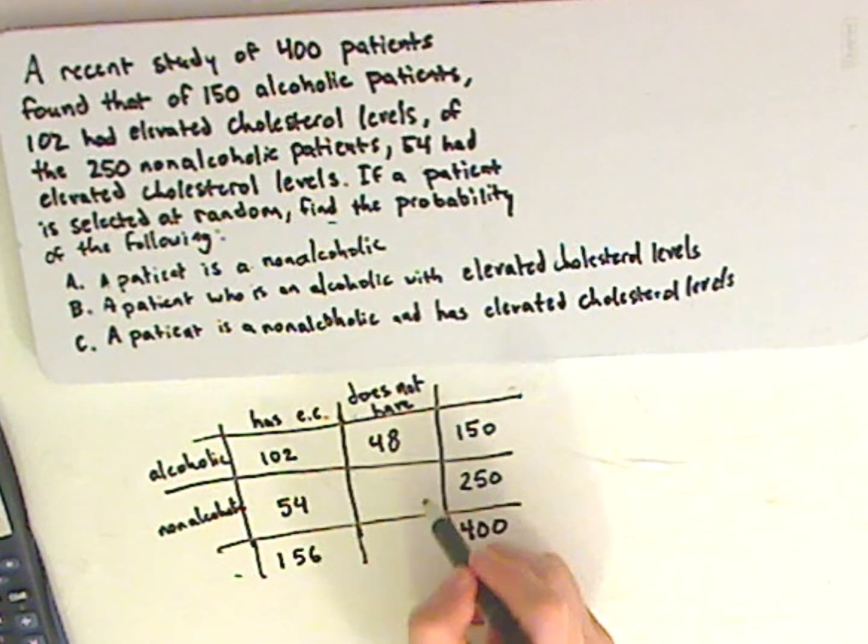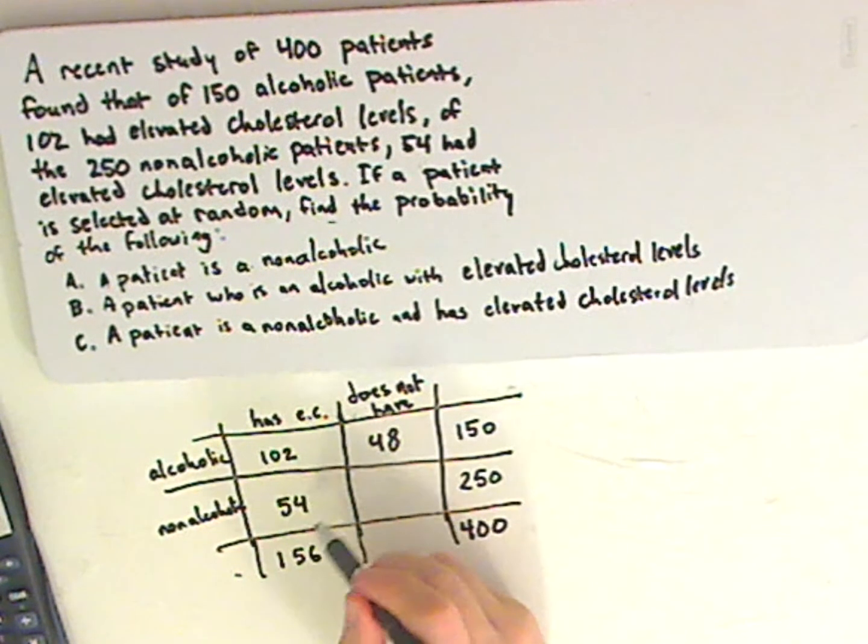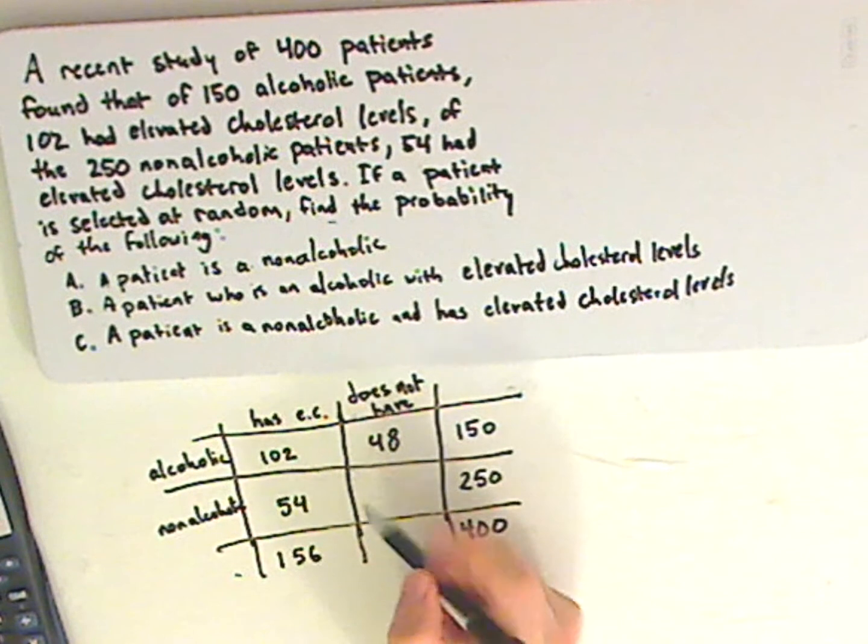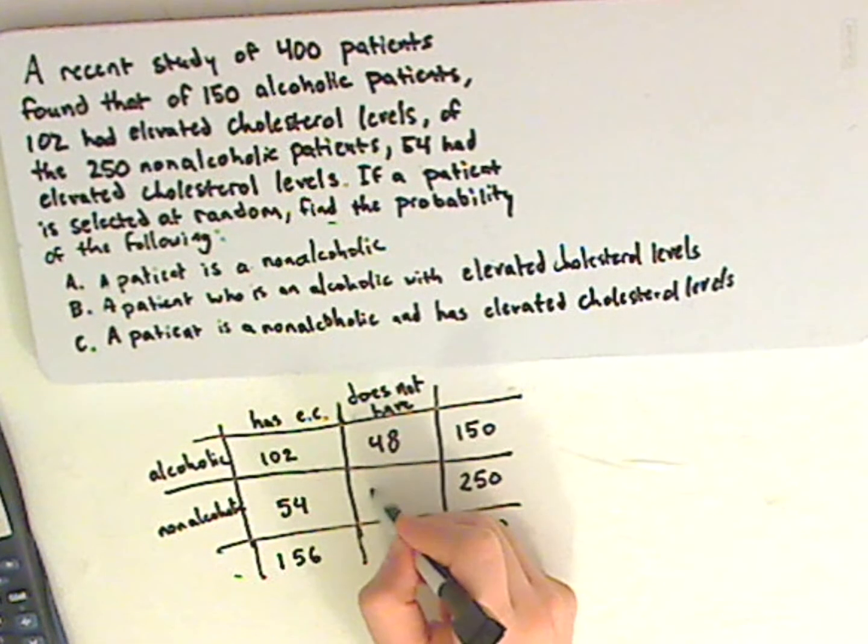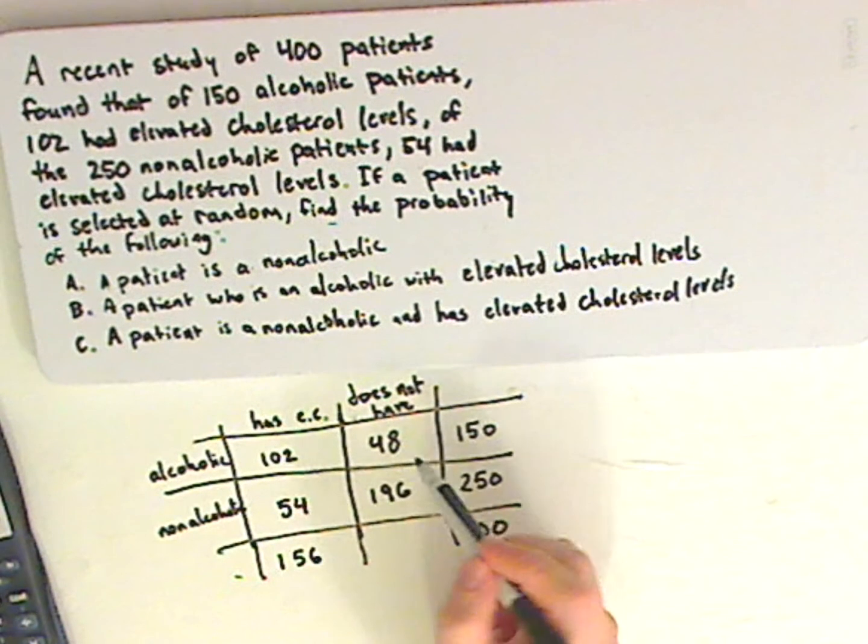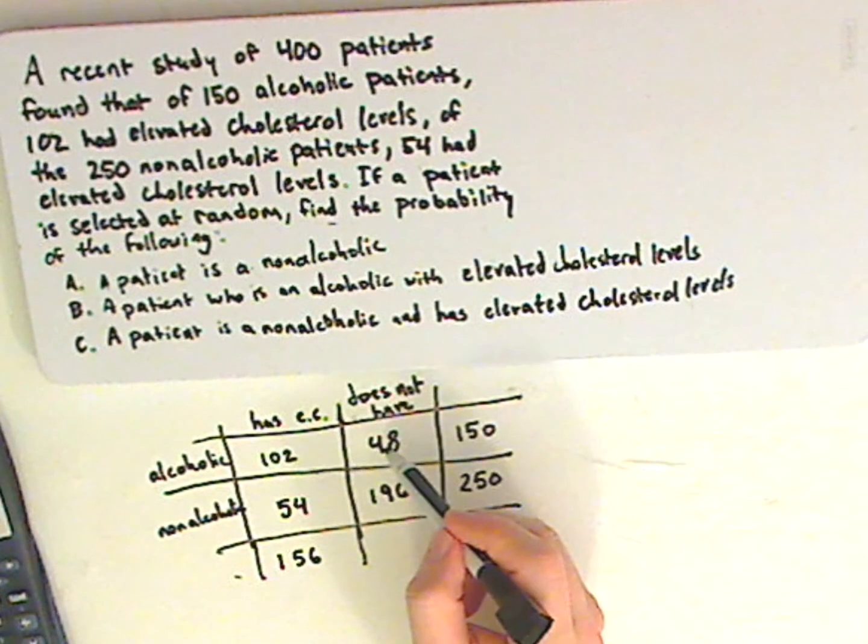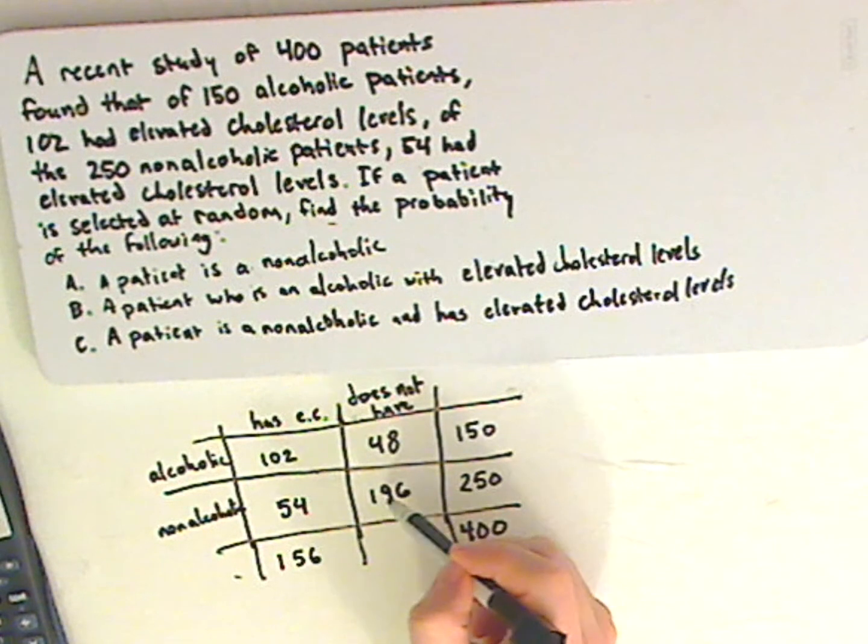So the total here would be 156. Now, this is 54, this is 250. Subtract 54 from 250, and you get 196. Now this total right here, 48 plus 196, is 244.